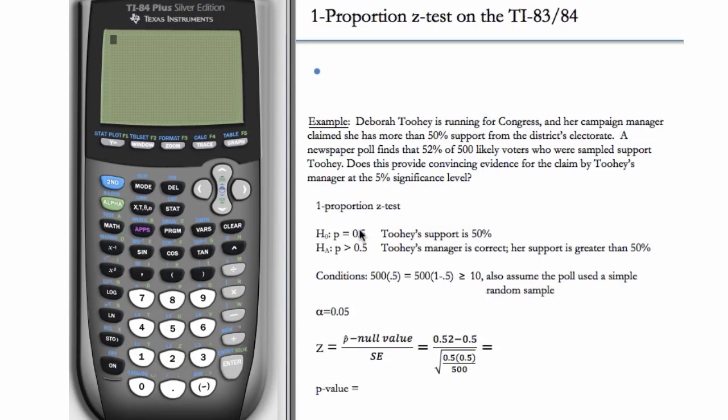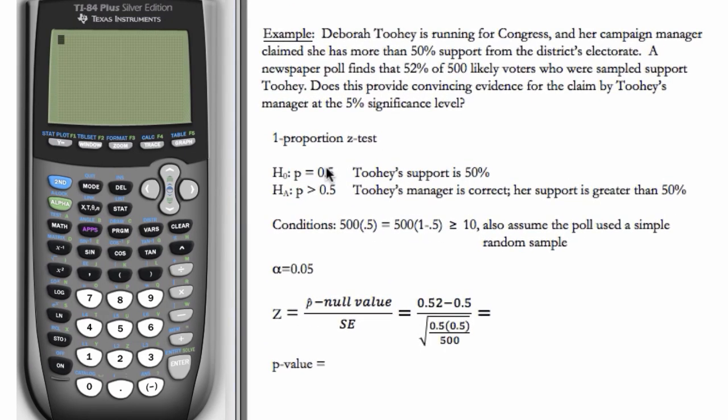We start with an example from Open Intro's Advanced High School Statistics. Deborah Tahoe is running for Congress, and her campaign manager claimed that she has more than 50% support from the district's electorate. A newspaper poll finds that 52% of 500 likely voters who were sampled support Tahoe. Does this provide convincing evidence for the claim by Tahoe's manager at the 5% significance level?